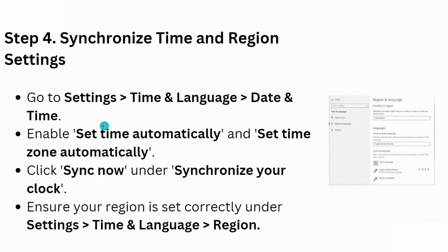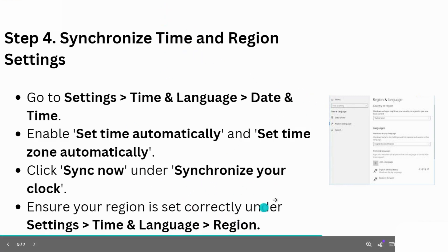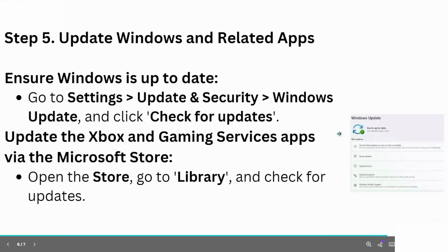After this, synchronize your time and region settings. Go to Settings, then Time and Language, select Date and Time, enable Set Time Automatically and Set Time Zone Automatically, and click Sync Now. Under Synchronize Your Clock, ensure your region is set correctly under Settings → Time & Language → Region.